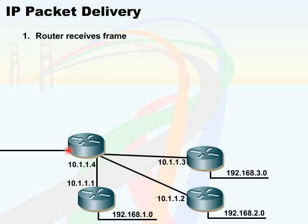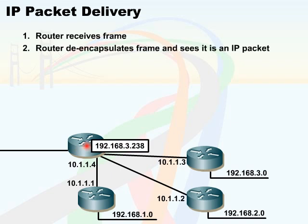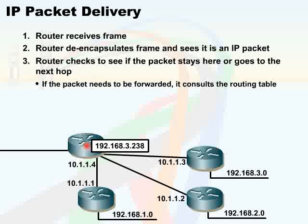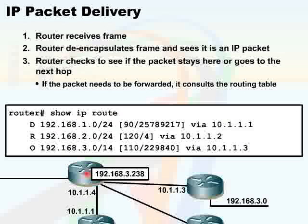As these packets arrive on the input buffer, the router will de-encapsulate the frame one by one and will notice that they're IP packets. It will then take the first IP packet and check to verify if the packet will stay with the router itself, or if it will be sent to a local router interface or a next hop router. If the packet needs to be forwarded to the next hop router, the receiving router will consult the routing table to figure out how to get it there.